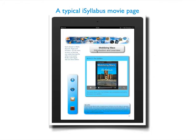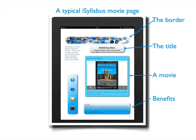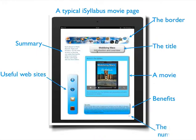This is a typical i syllabus page which has a movie on it. We have a border here, just to make it a little more lively. We have a title, we have a movie, we have the benefits that ought to accrue to the reader, a summary of what it's about, some useful websites, and finally the page number. Really simple.